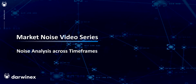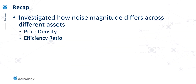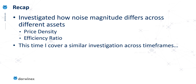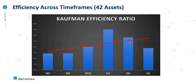Moving on from the analysis we've performed around different assets using both price density and the efficiency ratio, we now look at a similar investigation but across time frames. This time I'm going to start by looking at the efficiency ratio. The underlying analysis used the same 42 assets as previously, with noise levels for each asset averaged out so we can look at the effect of noise across different time frames, using 20 periods for the efficiency ratio.